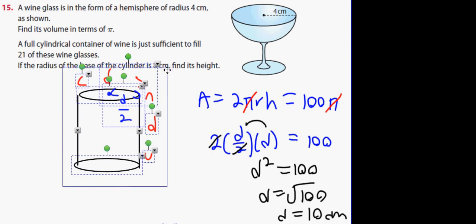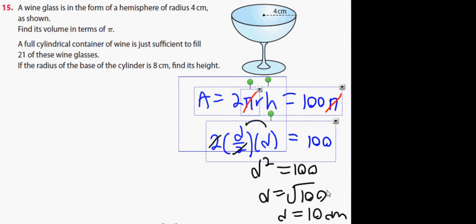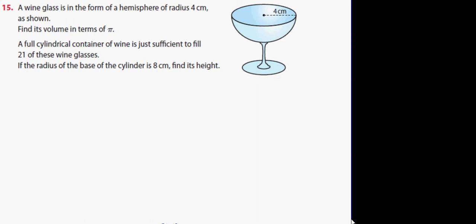Now, number 15. A wine glass is in the form of a hemisphere of radius 4 cm as shown. Find its volume in terms of π. Now see this part here that contains no wine usually, so it's not included. We're just talking about the hemisphere.